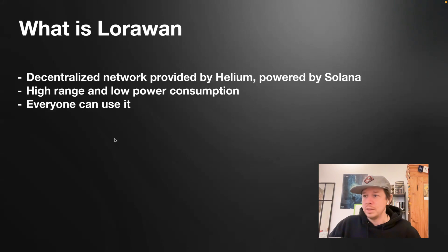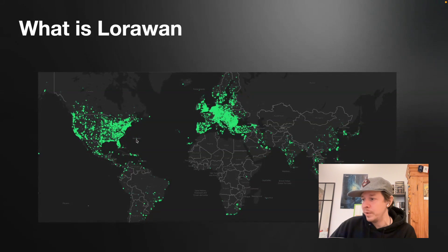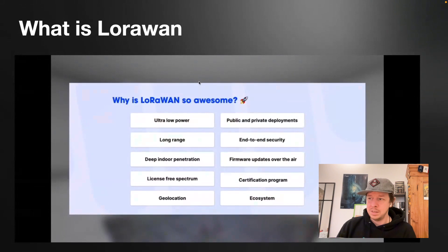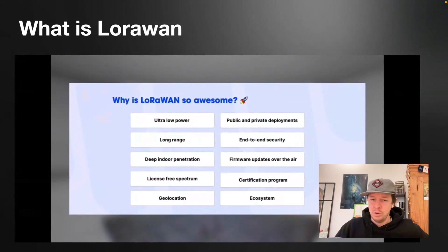Everyone can just use it. Here's the coverage map from today — Europe and the United States are already very well covered, and also some parts of China, India, and so on, with coverage growing every day. LoRaWAN has super low power, long range, deep indoor penetration, and runs on a license-free spectrum below one gigahertz in the megahertz spectrum. It's also secure because the data stream is encrypted.